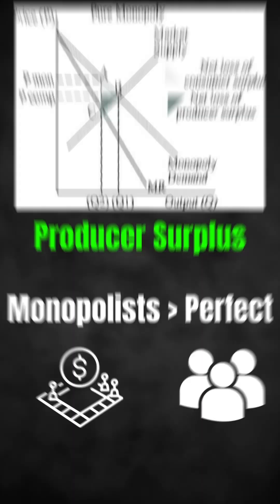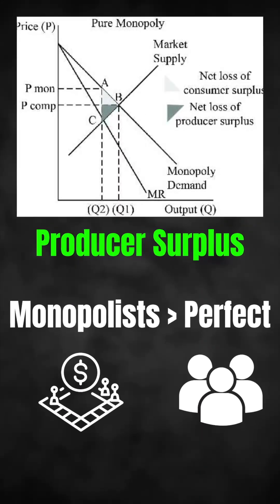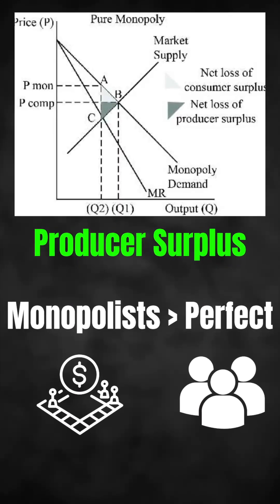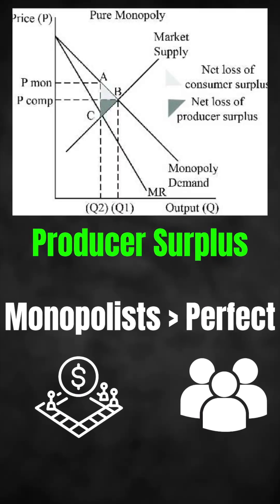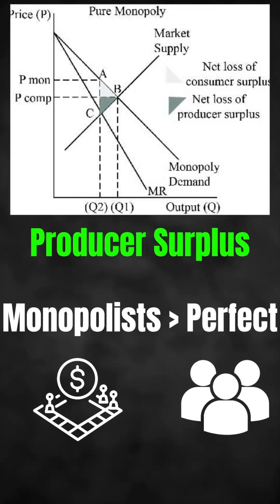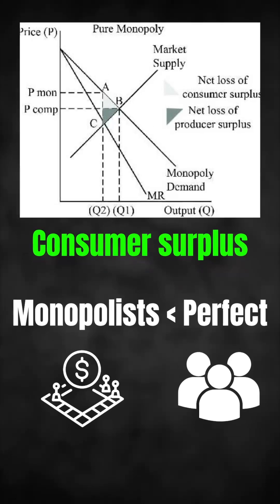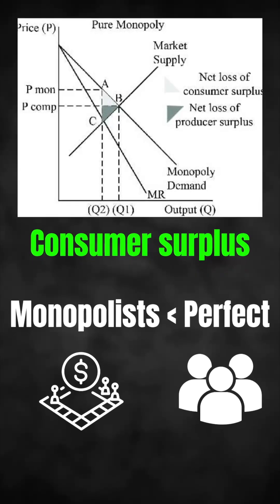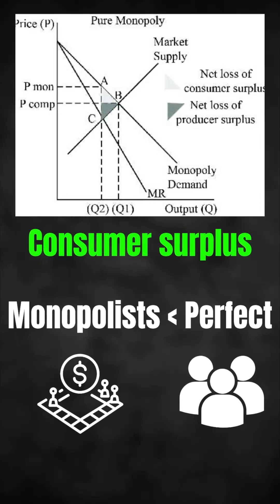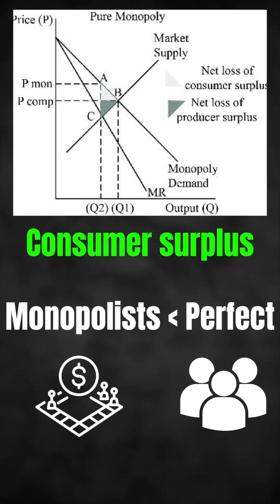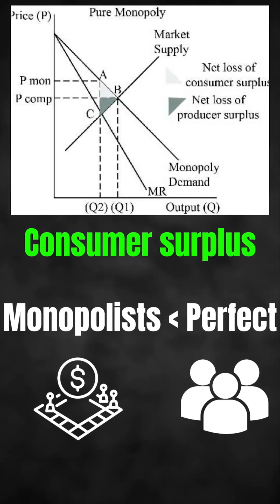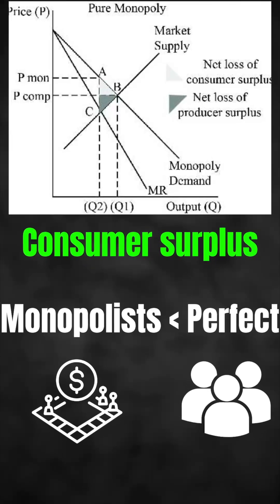The producer surplus for a monopolist will be higher than that of perfect competition, but the consumer surplus in a monopolist market will be lower than that of perfect competition.